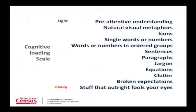The functional part of Neuberger's hypothesis is the cognitive loading scale — light stuff at the top: pre-attentive understanding, natural vision metaphors, icons — all the way down to stuff that outright fools your eyes with heavy loading at the bottom. It's 12 things you can put in a visualization; everything I've seen falls into one of these 12. The managers in my building need to be able to look at their employees and say 'that sucks' — and most importantly, it's not their opinion, there's this scale that shows you're using equations and jargon, which is too high a cognitive load. You've got to fix it.